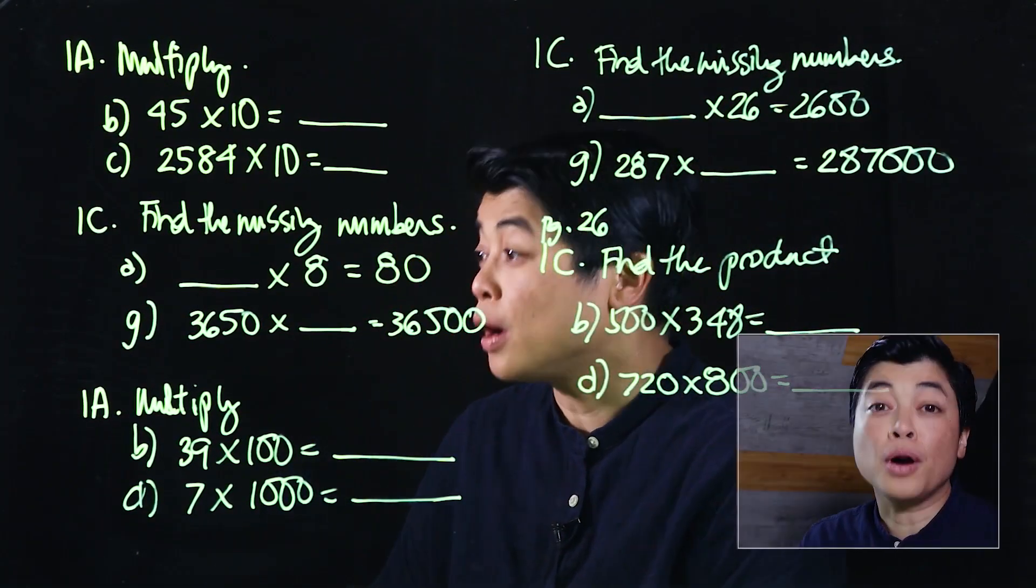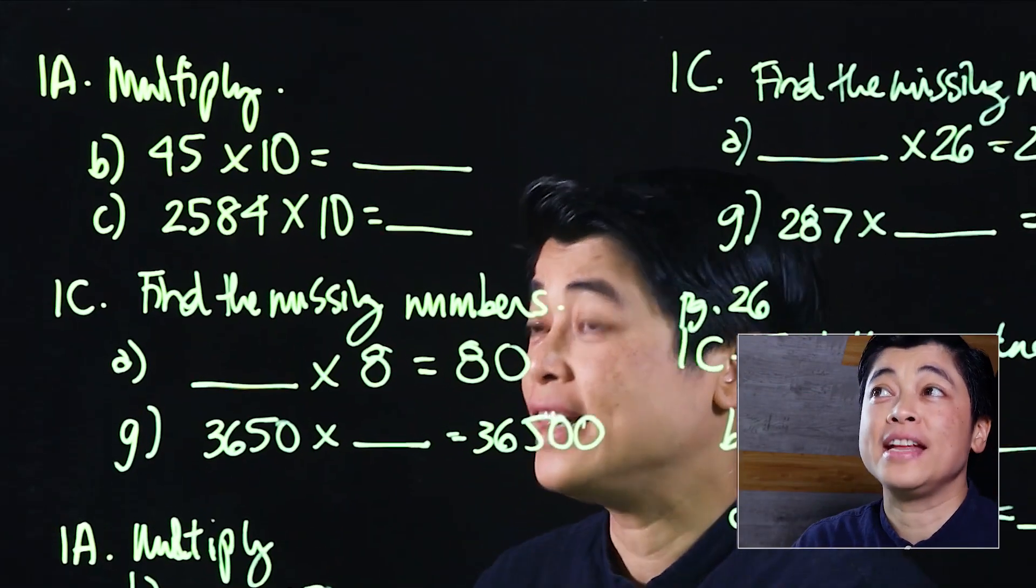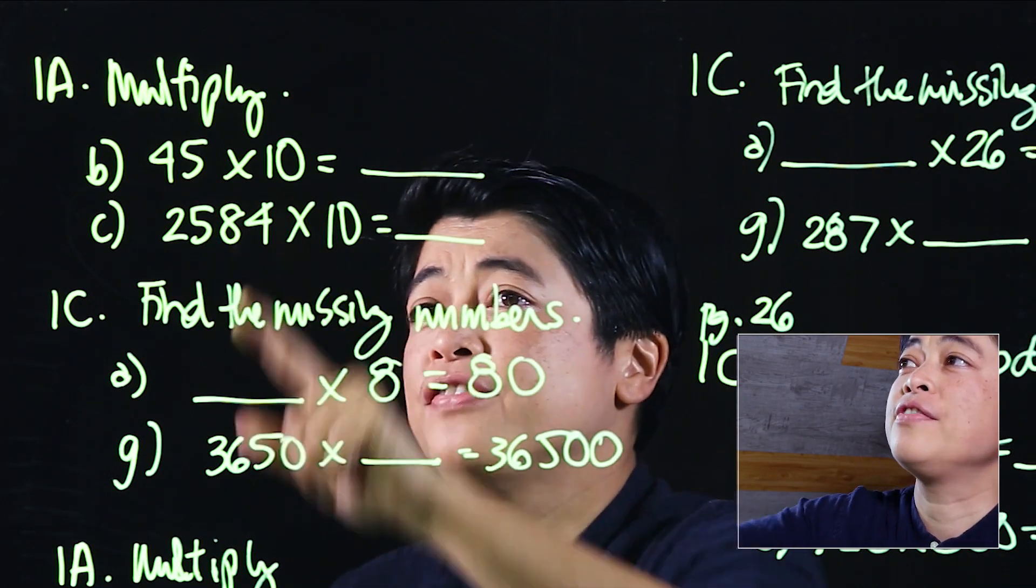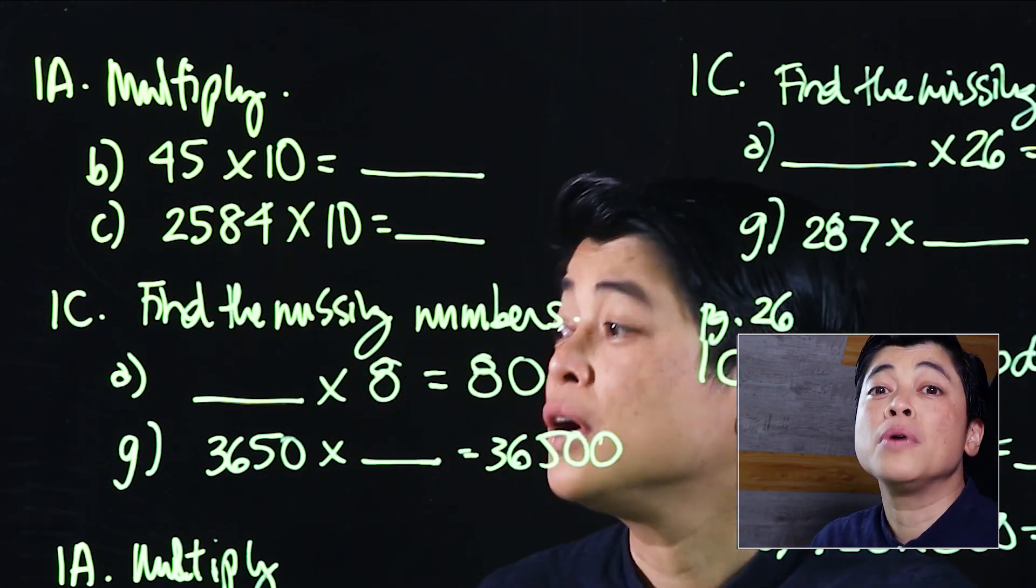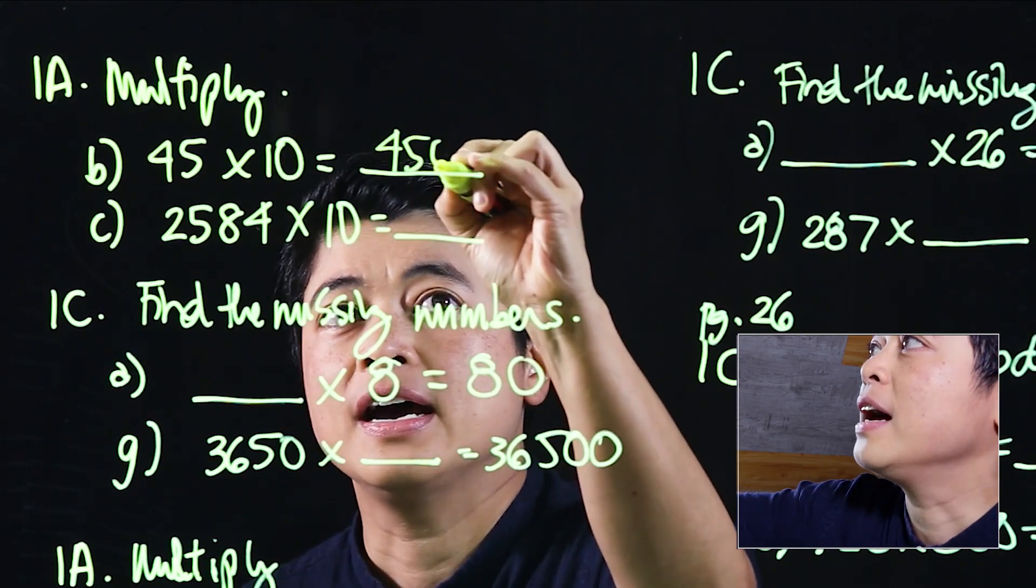Looking at these problems, starting with 1a on page 19: it says 45 times 10. Since we're multiplying by 10, all we do is take 45 and add one zero.